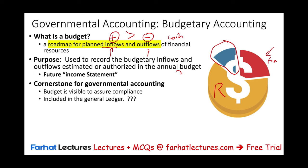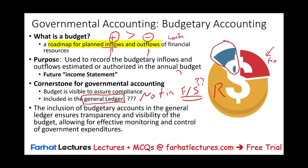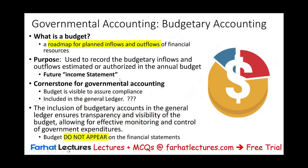The budget for governmental accounting is included in the general ledger. It is included in the general ledger but not included in the financial statements. It's included in the general ledger because we want to make sure the government is taking it seriously. The inclusion of budgetary accounts in the financial ledger ensures transparency and visibility to the citizens, allowing for effective monitoring and control of government expenditure. However, budgets do not appear on the financial statements.